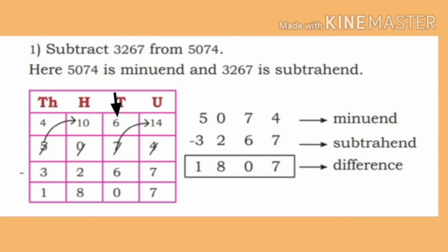Now, in the tens place of the minuend, 6 is present. Subtracting 6 from 6, we get 0. Write 0 in the tens place. In the hundreds place of the minuend, 0 is there. It is not possible to subtract 2 from 0. Therefore, borrow 1 from the thousands place.